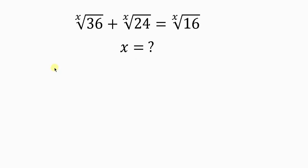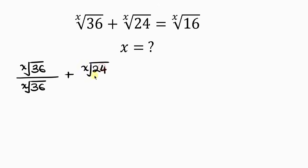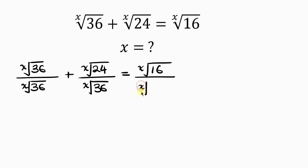Our first step will be to divide through by the x-th root of 36. So we have the x-th root of 36 divided by the x-th root of 36, plus the x-th root of 24 divided by the x-th root of 36, equal to the x-th root of 16 divided by the x-th root of 36. Notice that the x-th root of 36 cancels from the first term, leaving behind one.